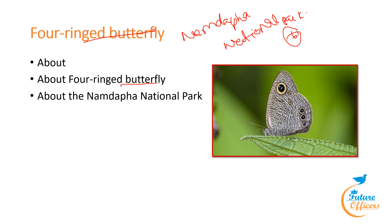Ypthima is considered a rich genus of the family Nymphalidae, which has some 6,000 species of butterflies. The highest Ypthima diversity is in China, particularly in Yunnan and Sichuan provinces. Diversity is also vast in Nepal, Bhutan, Myanmar, and the northeastern part of India. Namdapha National Park is located in the state of Arunachal Pradesh, flanked by the Patkai Hills to the south and southeast and the Himalayas to the north.